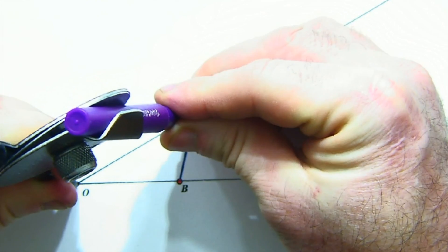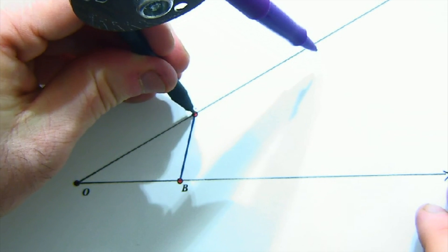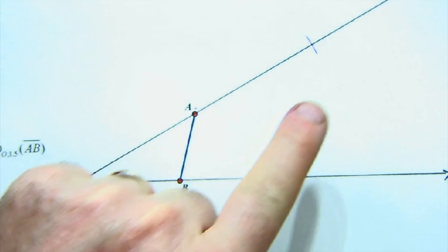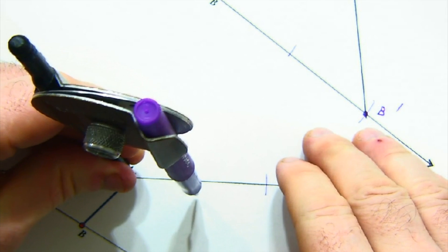So one and a half - we already are at one from O to A. So I need to go a half of the distance from O to A. How do you do that? Well, I've created two, so actually if I want to go a half, I'm going to do my midpoint construction.